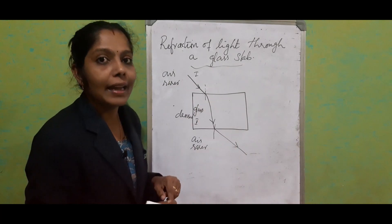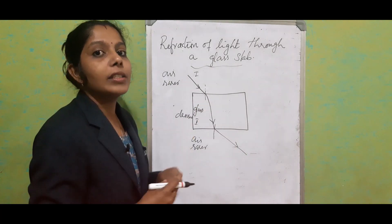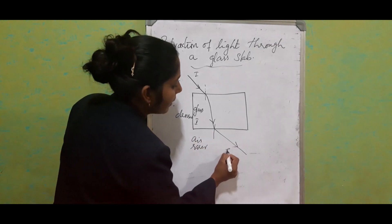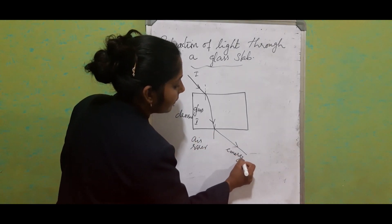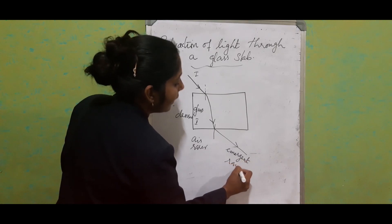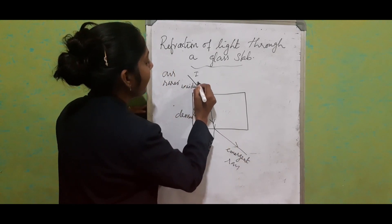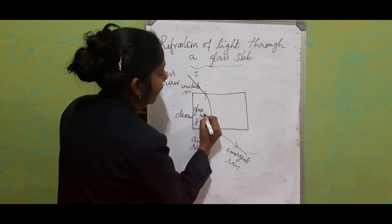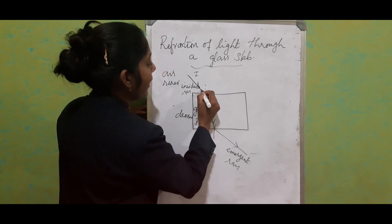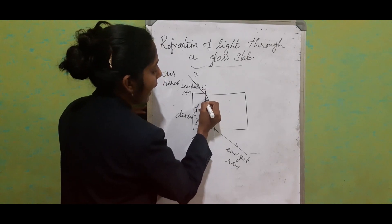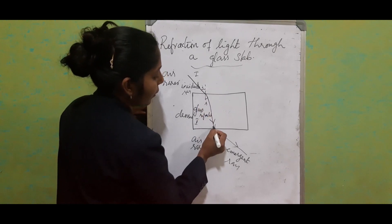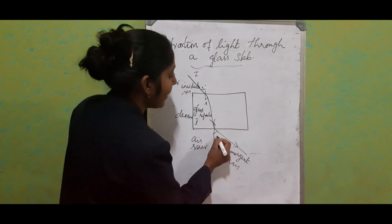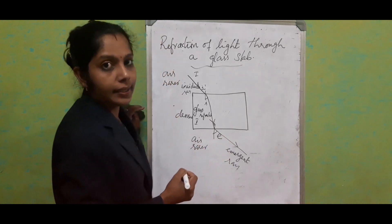This will be the path of light when it passes through a glass slab. Now this is called the emergent ray. This is the incident ray. The inside one is the refracted ray. Similarly, we have angle of incidence, angle of refraction. Here also angle of incidence, and instead of angle of refraction, we use the term angle of emergence.